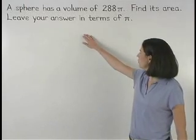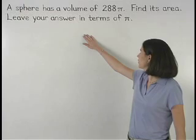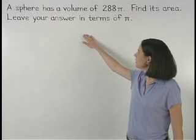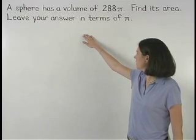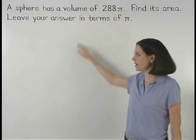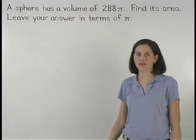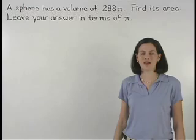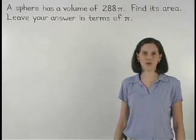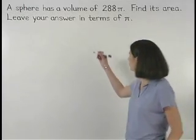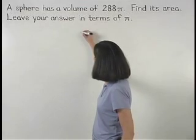A sphere has a volume of 288 pi. Find its area — leave your answer in terms of pi. To find the area of the sphere, remember that the formula for the area of a sphere is 4 pi r squared.